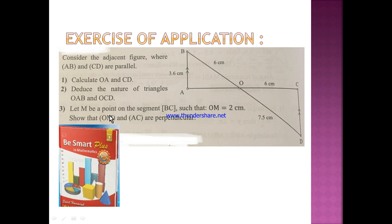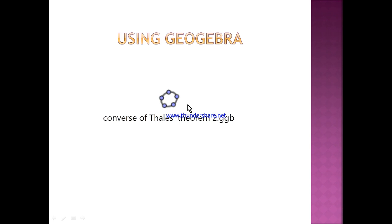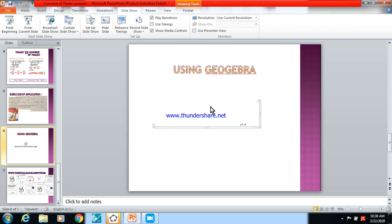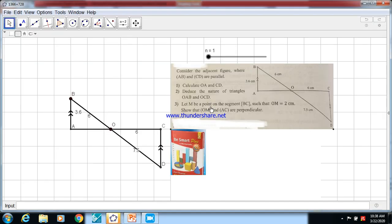Let me take an exercise from the book of Mr. Saeed Hamadiyya B plus Smart. This is an exercise of using Thales and Converse of Thales. I will go to geometric representation using GeoGebra. Usually in class, I use this book and another book, Smart for Mr. Hassan Tread, also a good book. Consider in the adjacent figure, we have AB and CD are parallel lines. Calculate OA and CD.